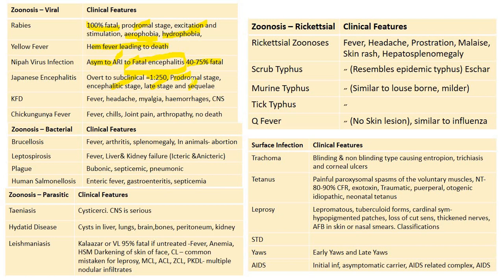Japanese encephalitis: prodromal stage, encephalitis stage, late stage, and sequelae will be present. KFD presents with fever, headache, myalgia, hemorrhages, and CNS manifestations as causes of mortality. Chikungunya fever never causes death but presents with fever, chills, joint pains, and arthropathy. Brucellosis: fever and arthritis will be present; splenomegaly; in animals it causes abortion. Leptospirosis: fever, liver and kidney failure; there are icteric and anicteric types.